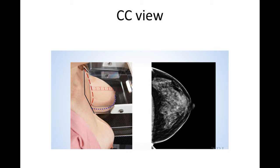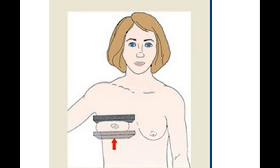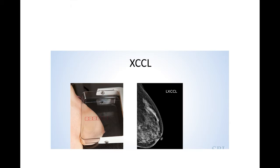The second standard view is the cranio-caudal view, in which the image receptor is on the caudal end of the breast and the x-ray tube is on the cranial end. The caudocranial view is the reverse: the image receptor is on the cranial end and the x-ray tube is on the caudal end of the breast. There is also the laterally exaggerated cranio-caudal view.